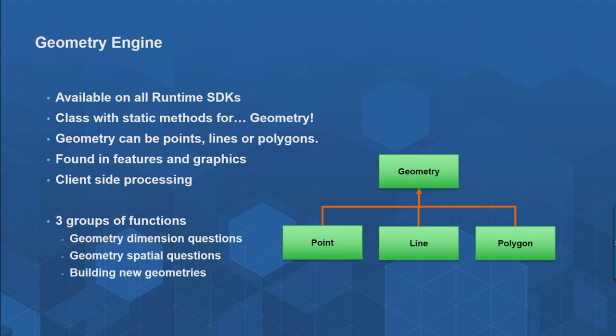The Geometry Engine is a class which, as its name suggests, is for working with geometry — points, lines, and polygons. These geometries are typically found inside features, inside feature classes that could be hosted in ArcGIS Online or ArcGIS Server, or even in a shapefile. You also find them in graphics overlays as well. What we're talking about here is client-side processing — all processing done very quickly and efficiently on the processor on your local machine.